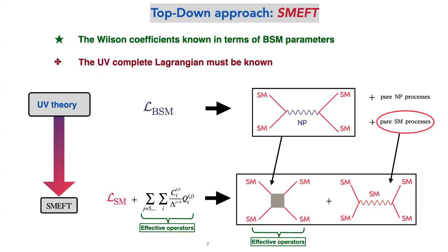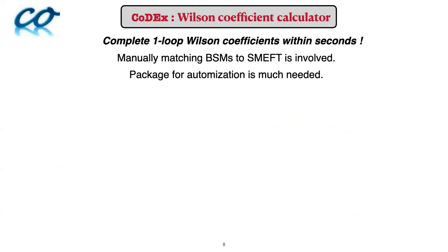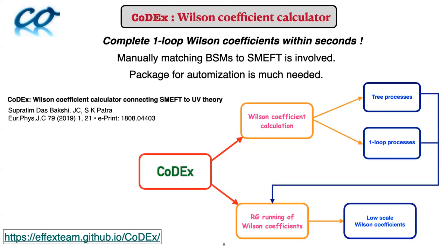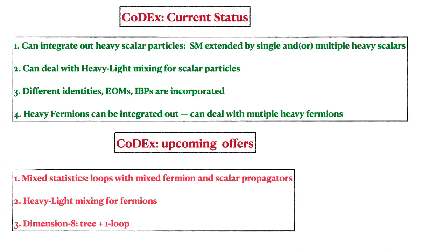To integrate out multiple BSM theories and compute Wilson coefficients, we introduced and automated a code called CODEX — the Wilson coefficient calculator. You define your BSM Lagrangian, identify the BSM part with its mass and quantum numbers, and get Wilson coefficients at tree level and up to one loop. Those operators are generated at the matching scale, and you can run them down using anomalous dimension matrices to get low-scale Wilson coefficients.